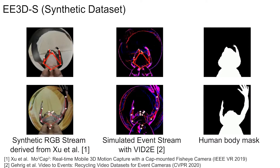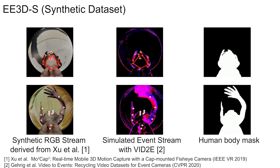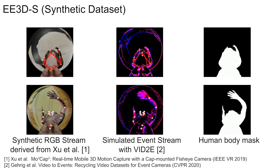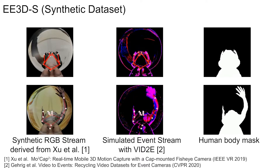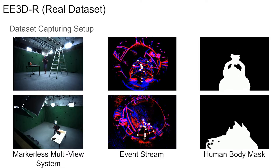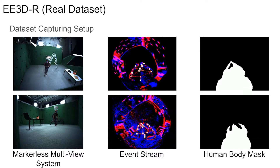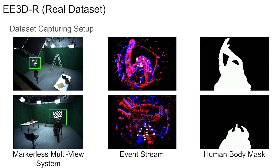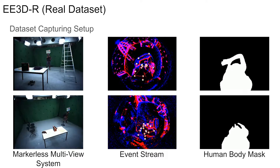Our synthetic dataset is generated by rendering synthetic videos of human motions from an egocentric virtual camera at a high frame rate, which are then fed into an event stream simulator to produce event streams. Human body masks are obtained by projecting the 3D human body shape onto the egocentric virtual camera. We use a markerless multi-view motion capture system to acquire a real-world dataset with egocentric event streams and corresponding ground truth annotations, including 3D poses and SMPL body fittings. A head-mounted device records the event streams and tracks their 3D position in each frame through multi-view images in the world coordinate frame.